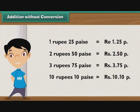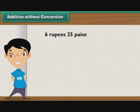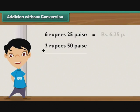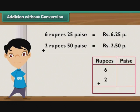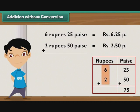Let us now perform additions without any conversions. Let's add 6 rupees 25 paise and 2 rupees 50 paise. First, write 6 rupees 25 paise as ₹6.25P, and just below it write 2 rupees 50 paise as ₹2.50P, so that the rupee part falls in the rupee column and paise part falls in the paise column. Step 1: Add the numbers in the paise column — 25 plus 50 equals 75; write 75 in the paise column. Step 2: Add the numbers in the rupees column — 6 plus 2 equals 8; write 8 in the rupees column. The result is 8 rupees 75 paise.